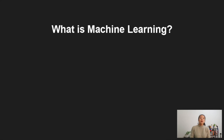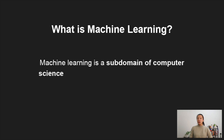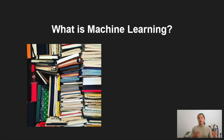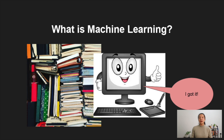Let's first start off with what is machine learning. Machine learning is a subdomain of computer science that focuses on algorithms which help a computer learn from data without explicit programming. We want our computer to be able to go through a large data set and find patterns in that data set by itself, without us explicitly telling the computer.